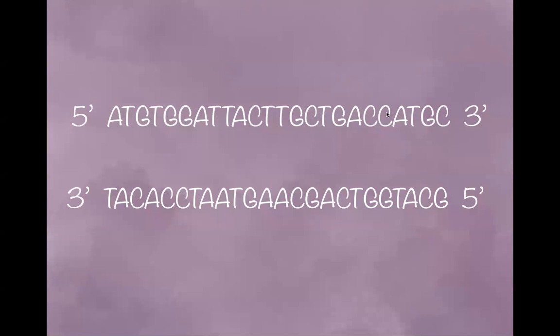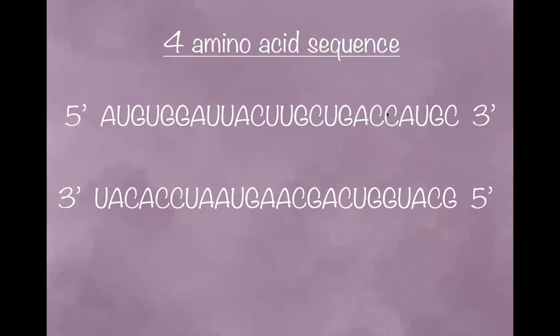We need to find a four amino acid sequence, and in order to read our amino acid dictionary, let's change the T's to U's. Pause the video now and try it. Hopefully your sequence looks like this. Now let's look for the sequence by reading the top strand from left to right.